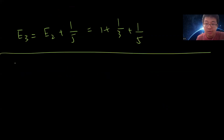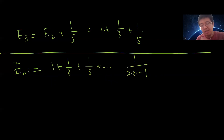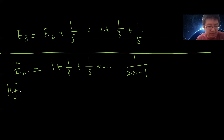You can now see the pattern. E_n equals 1 + 1/3 + 1/5 + ... + 1/(2n−1). Let's prove this by mathematical induction.